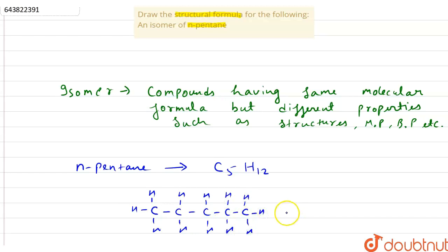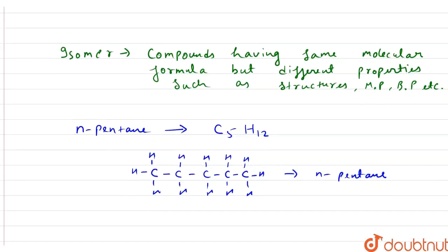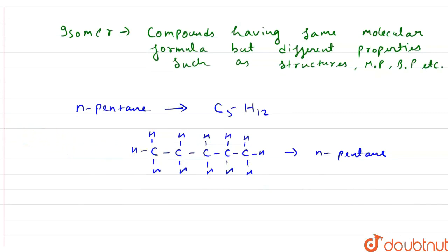And at the terminal there will be 3 hydrogen. So its condensed formula will be C5H12 and this compound is known as n-pentane. So we have to draw its isomer having same molecular formula but different structure.